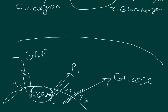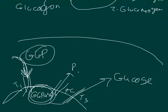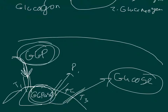In glycogen storage disease type 1, two things could be wrong. The transporter could be broken and glucose-6-phosphate can't get to the enzyme, or the enzyme itself could be broken so even though it got there, it couldn't be converted into glucose. So when we break down our glycogen, it just stays as glucose-6-phosphate and doesn't do anything, and the blood sugar remains perpetually low.